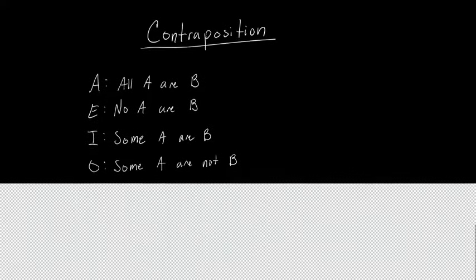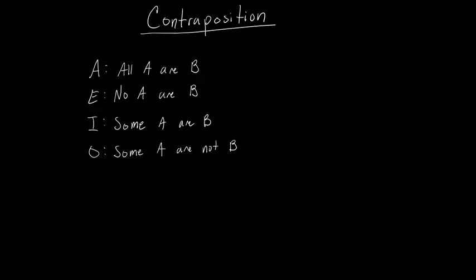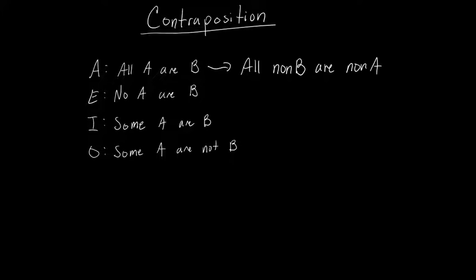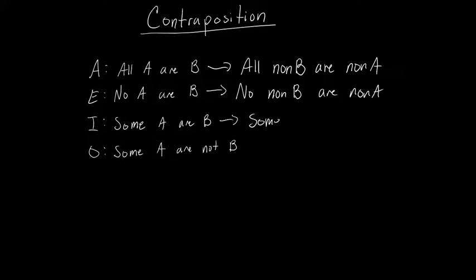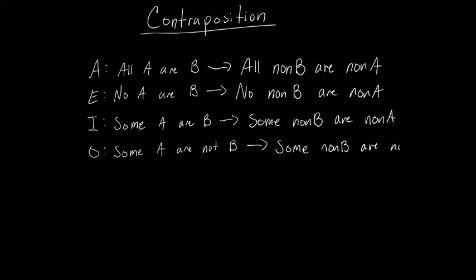Let's move on to the third and final transformation you're going to be asked to do, and that's contraposition. Contraposition is not as tricky as obversion, but there are still a couple of steps. The contrapositive of 'all A are B' is 'all non-B are non-A'. You swap the subject and predicate and replace them with their complements. So similarly: 'no non-B are non-A', 'some non-B are non-A', and 'some non-B are not non-A'.